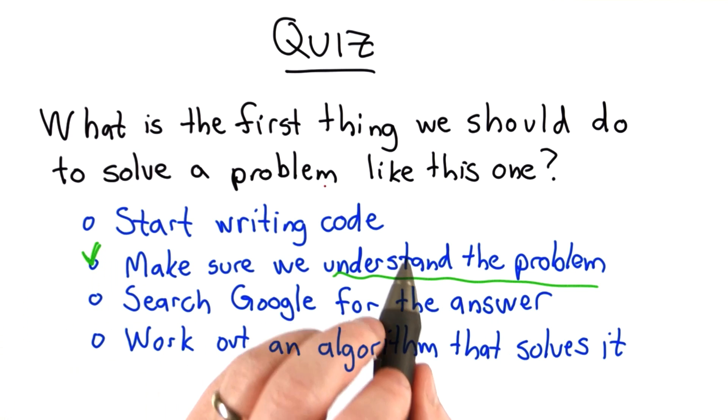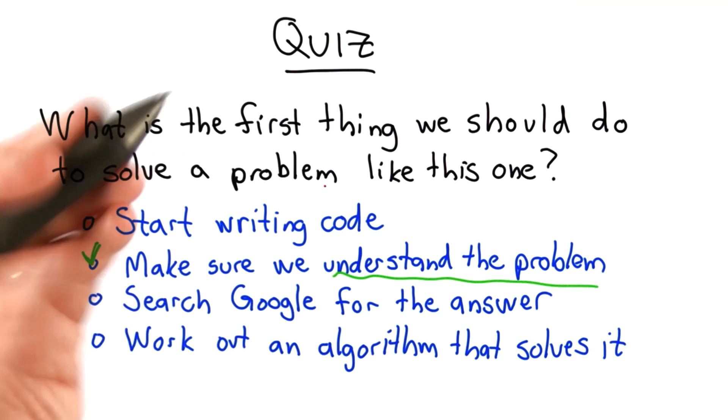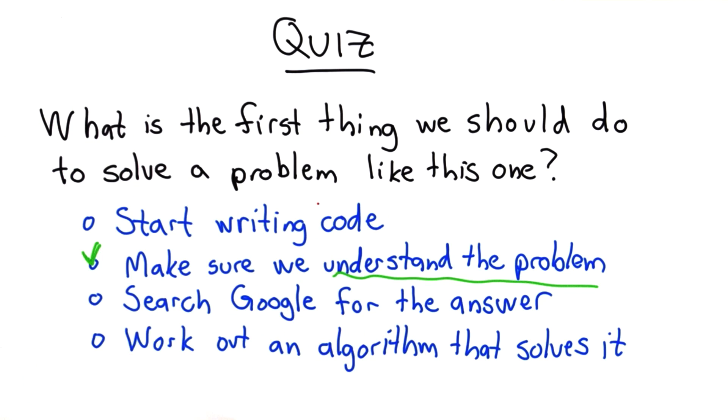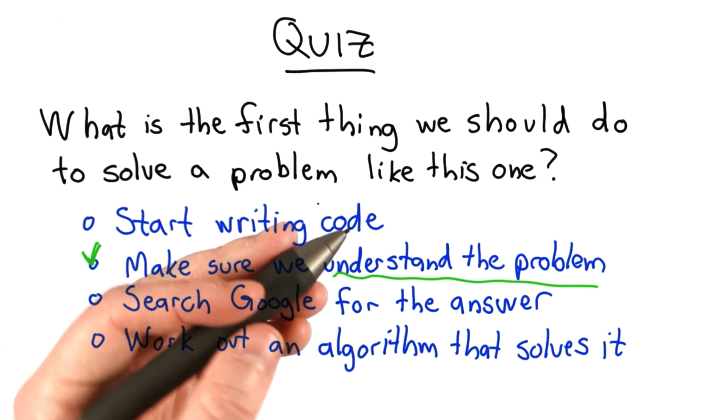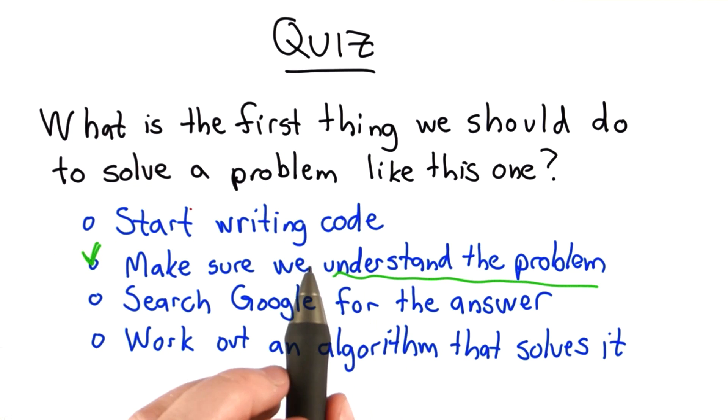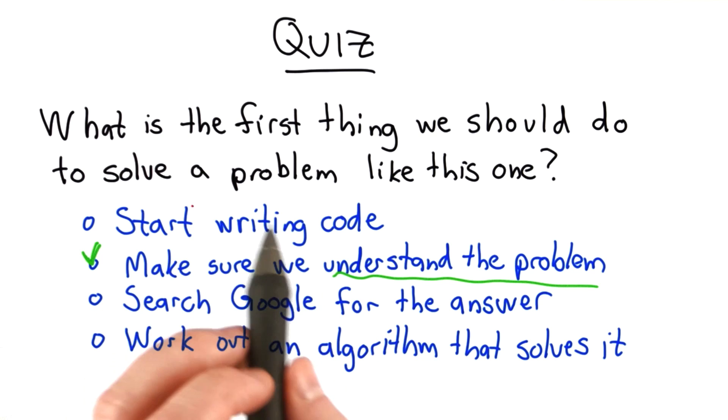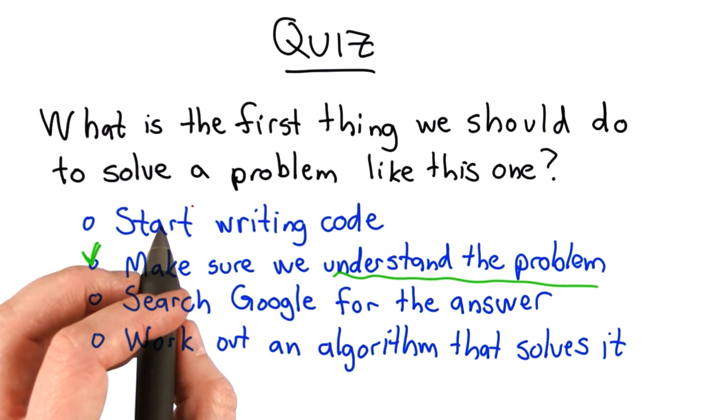It's often tempting to start writing code too early. Writing code is fun, and that's what we like to do as programmers and computer scientists. The problem with starting to write code before we understand a problem is we might write the wrong code. We might get very frustrated trying to write code before we really understand the problem or how to solve it, or we might end up writing a lot of code that doesn't actually solve the problem we wanted to solve.